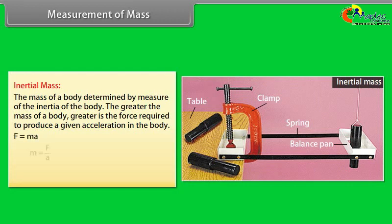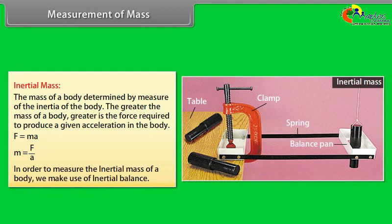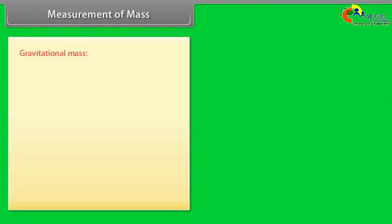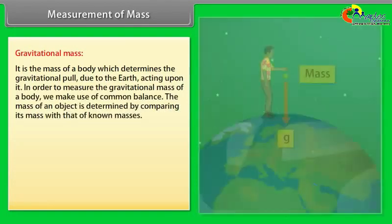The greater the mass of a body, greater is the force required to produce a given acceleration in the body. F is equal to MA, or M is equal to F upon A. Thus a very heavy body has a larger inertial mass than a light body. In order to measure the inertial mass of a body, we make use of inertial balance.